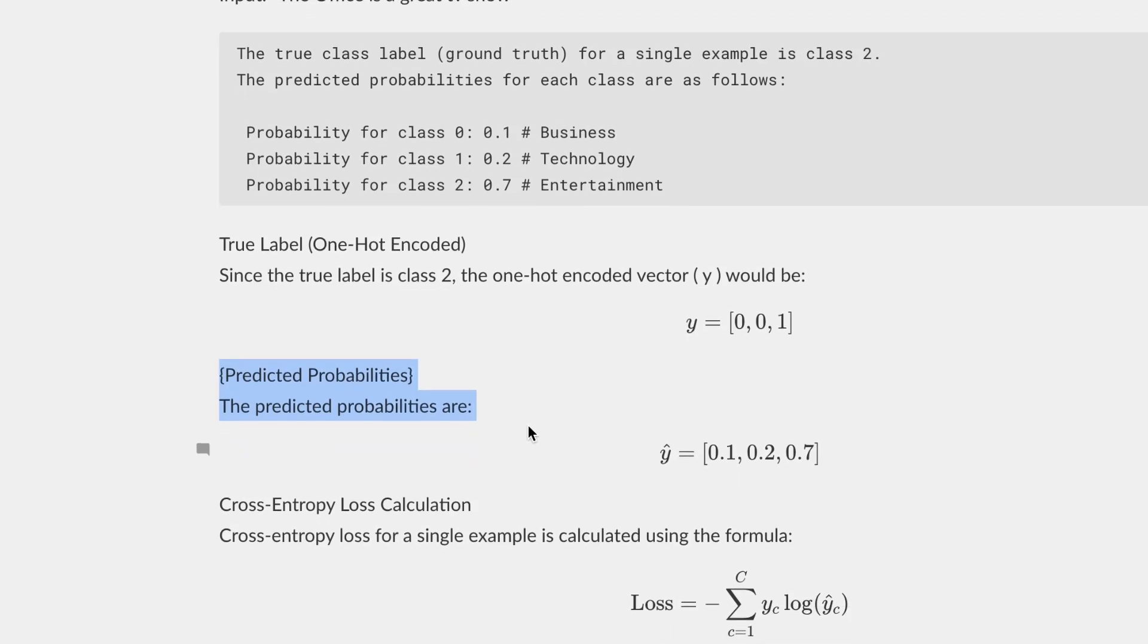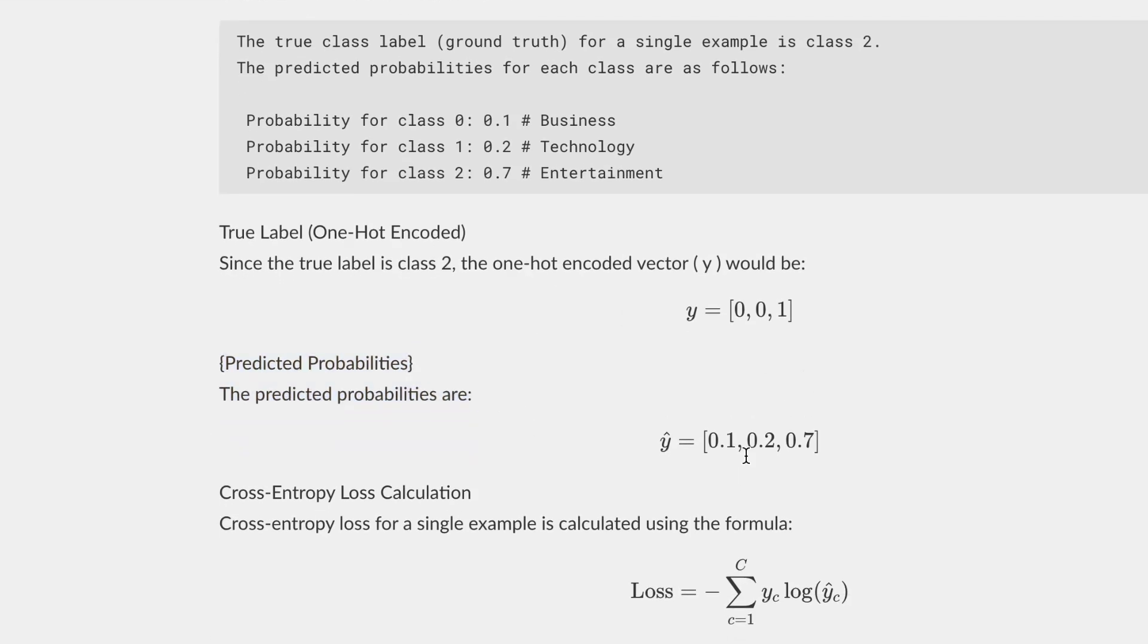Here are the predicted probabilities that our model has guessed. It guessed that it belongs to business 10%, technology 20%, and entertainment 70%.